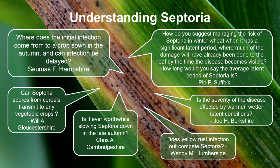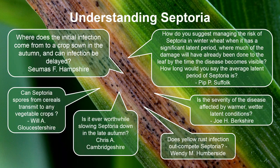From Joe in Berkshire: is the severity of the disease affected by warmer, wet, and latent conditions? Typically the latent period for septoria is somewhere between two and four weeks, but this is very dependent on temperatures. In a warm wet May, latent periods come right down, we get faster cycling disease, and more disease rapidly occurring. Warmer, wetter conditions are going to present a big challenge in terms of septoria development.